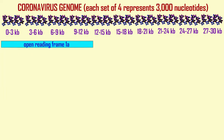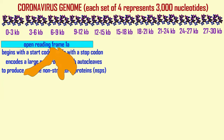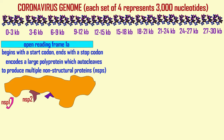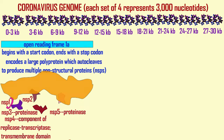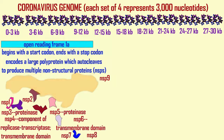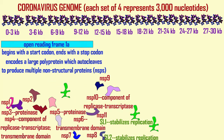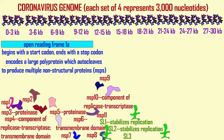In addition to sequence differences, there can be differences in the proteins made. In the coronavirus genome, the first two-thirds contains two open reading frames which code for two polyproteins.